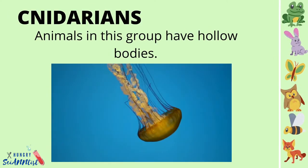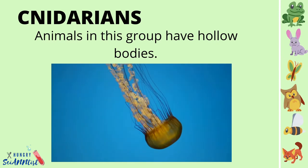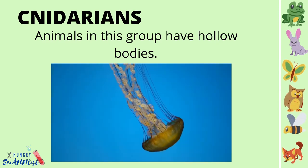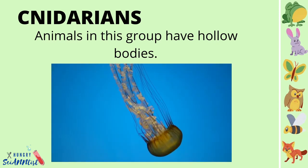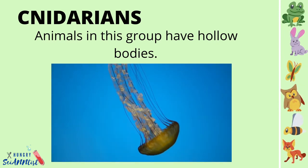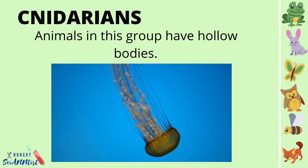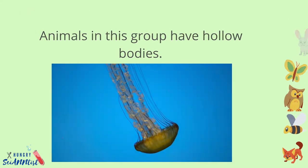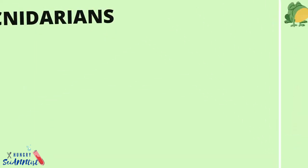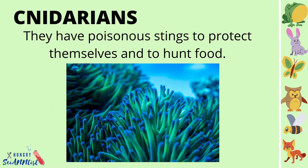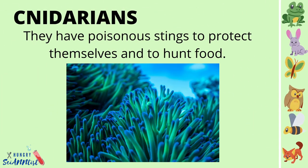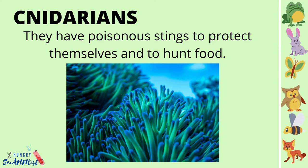Cnidarians are animals in this group that have hollow bodies. They have poisonous things to protect themselves and to hunt food.